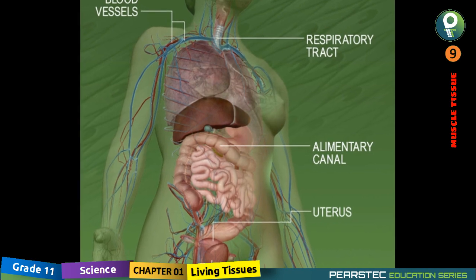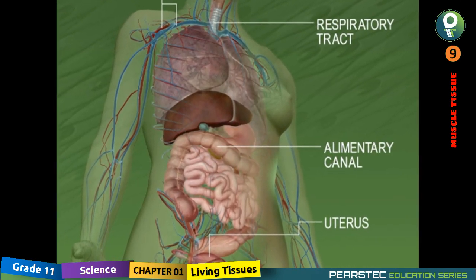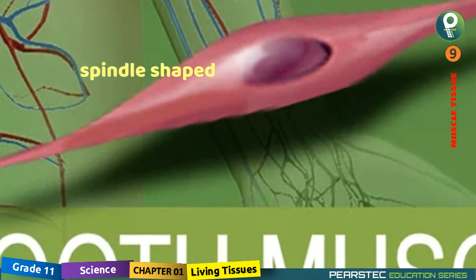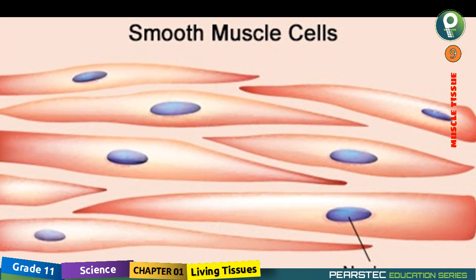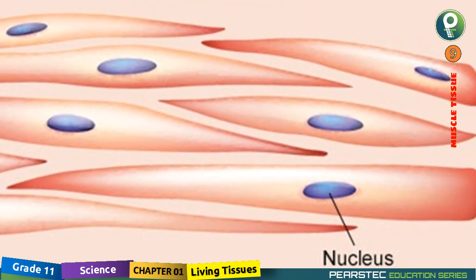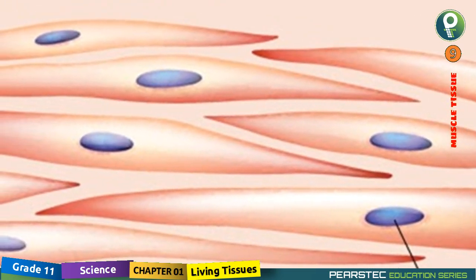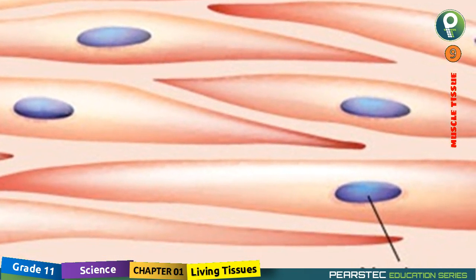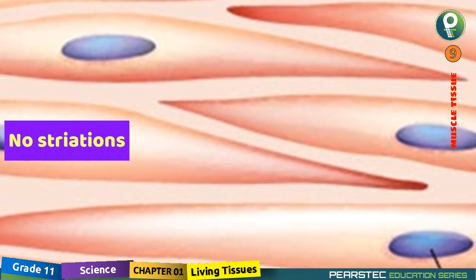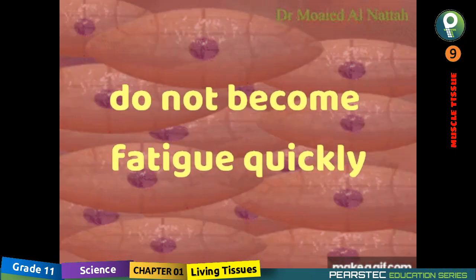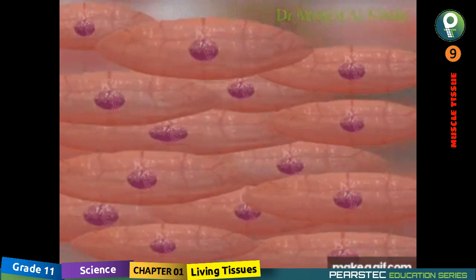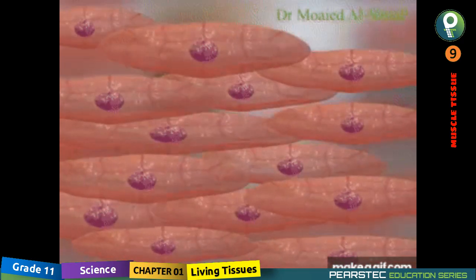Now let's understand the features of smooth muscle cells. These cells are spindle-shaped and unbranched — there are no branches. These cells have one nucleus at the center and no striations. These cells do not become fatigued quickly, and they are controlled involuntarily.